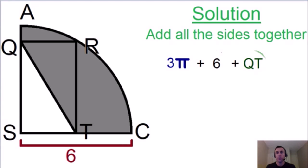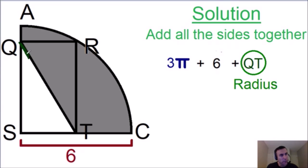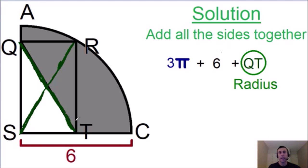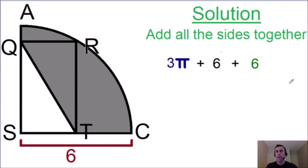The only thing left to find is QT. QT is the diagonal of this rectangle. Notice how the other diagonal of the rectangle is exactly the same length and is the radius of the circle — it starts at the center and goes to the edge. Both diagonals are exactly the same length, so if one is the radius, the other is too. Therefore, QT equals the radius, which is six.